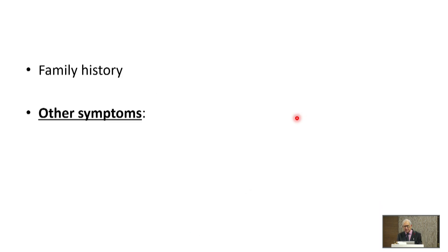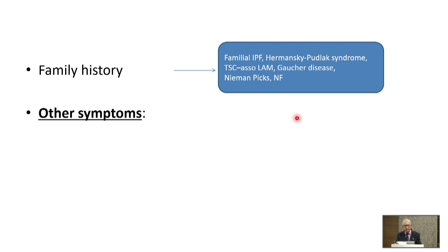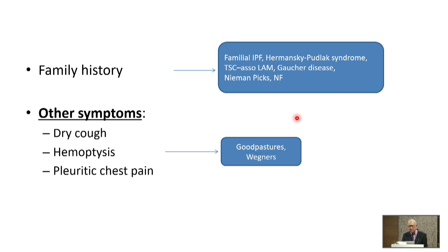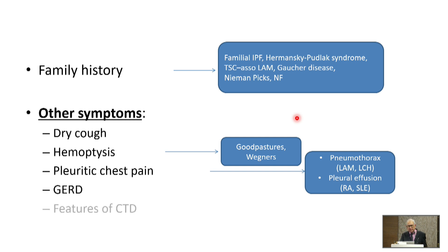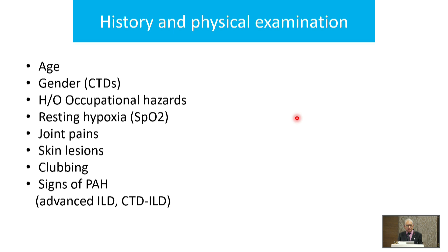Exposure history is extremely important — silicosis in stone workers and so on. Family history matters for familial IPF, Hermansky-Pudlak syndrome, tuberous sclerosis, LAM, and Birt-Hogg-Dubé syndrome. Symptom clues: hemoptysis suggests Goodpasture's; pneumothorax suggests LAM and LCH; pleural effusion suggests CTD and SLE.